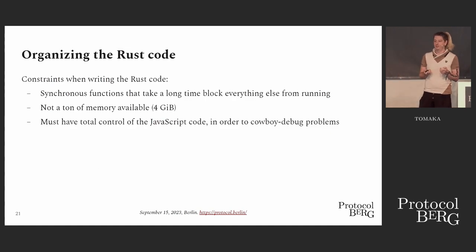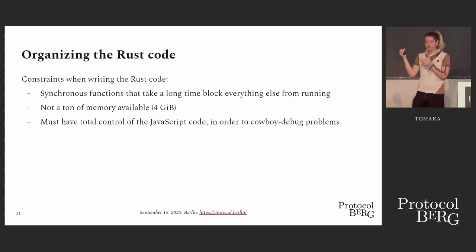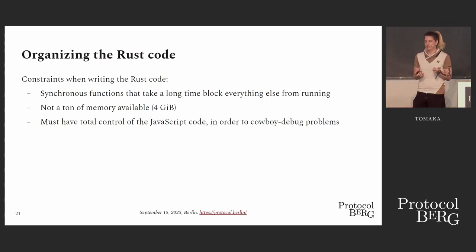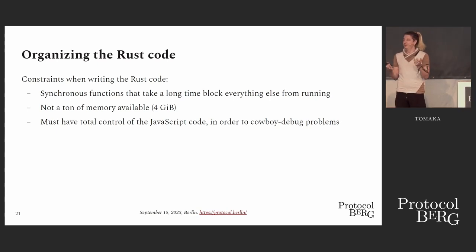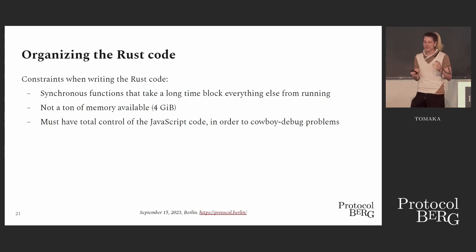This reflects itself in the Rust code — these annoyances you have to deal with. A key constraint we fixed was having total control of the JavaScript code, in order to fix these issues in a cowboy-y way. If something needs fixing, you want to fix it without having to submit a pull request to a third-party dependency and wait six months.